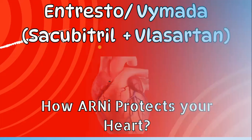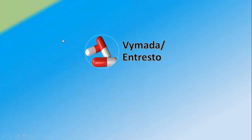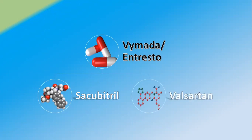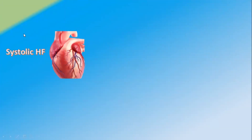Enteresto or Vymada majorly comprises of two molecules: one is Sacubitril and another is Valsartan. Vymada or Enteresto is generally prescribed for systolic heart failure, in which there is a reduced ejection fraction.